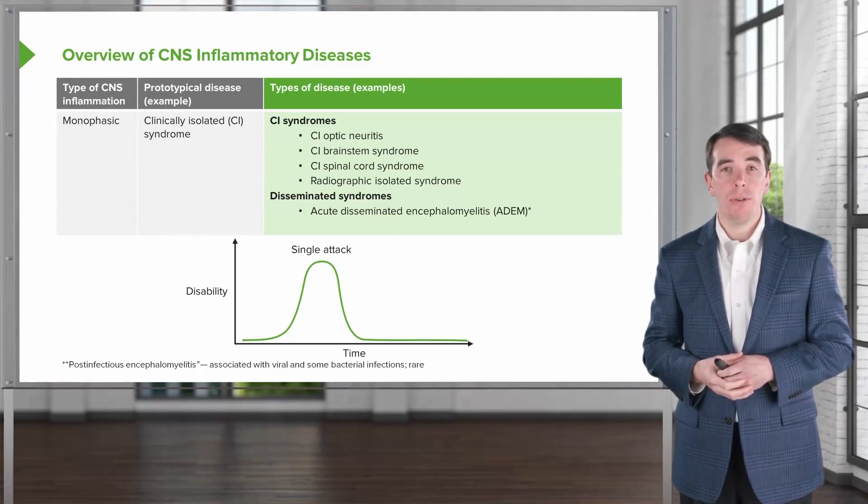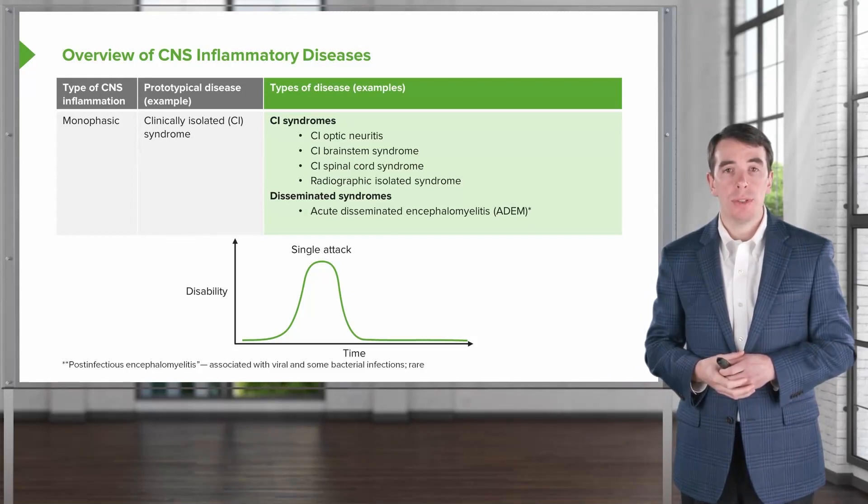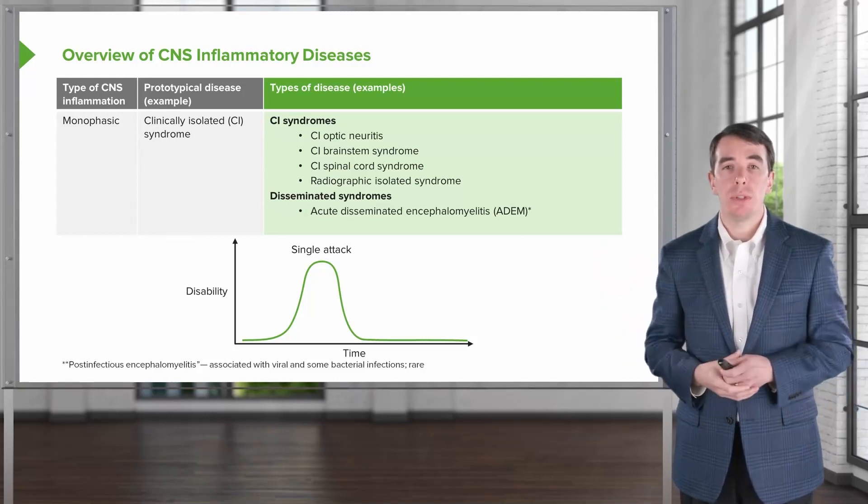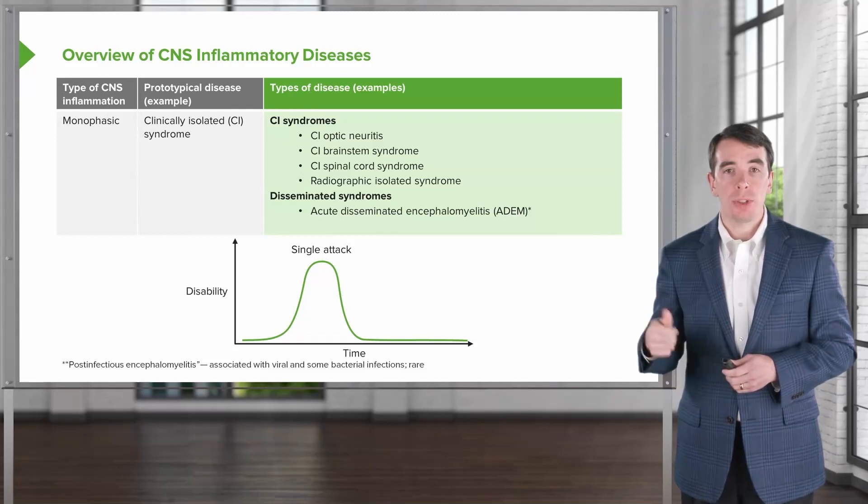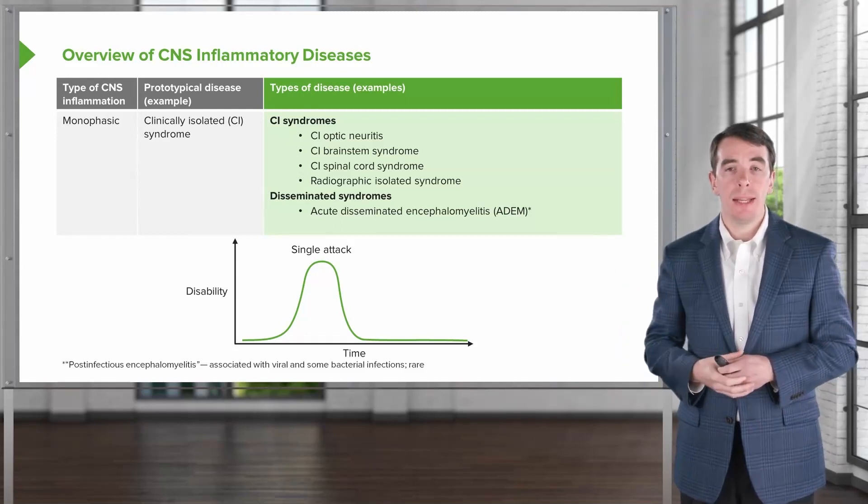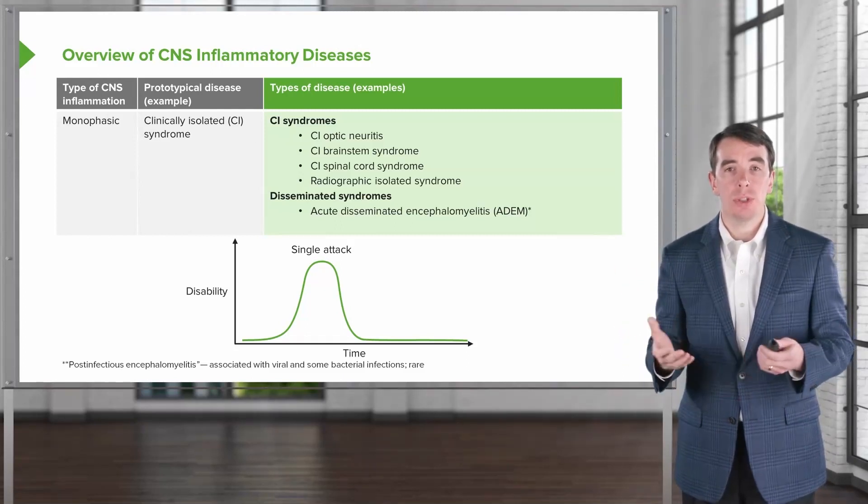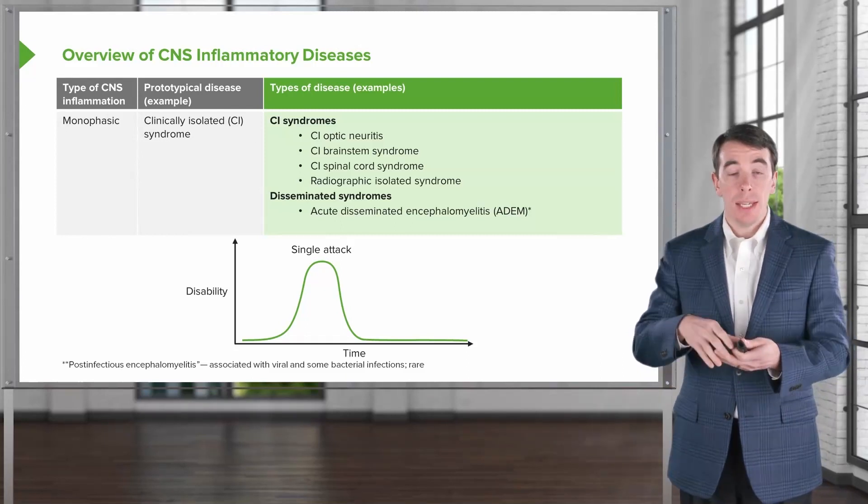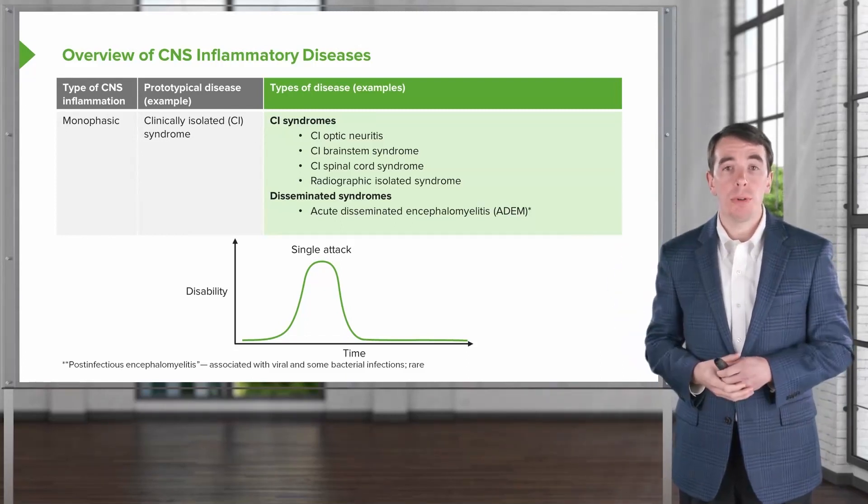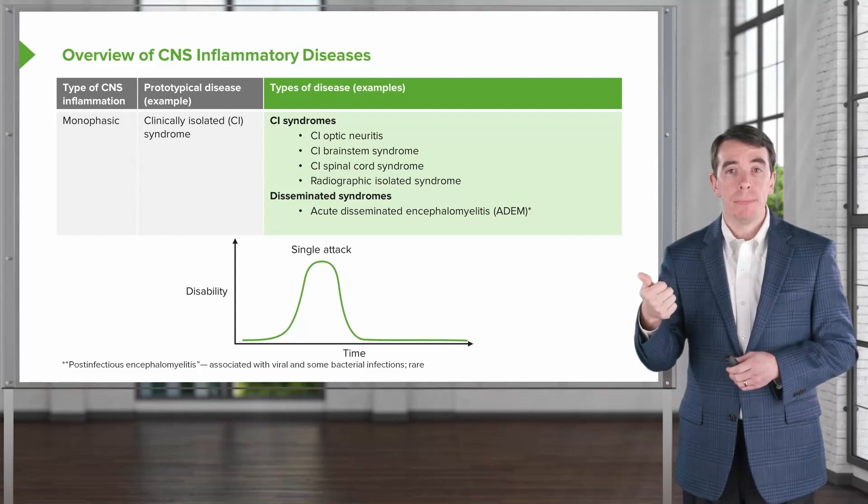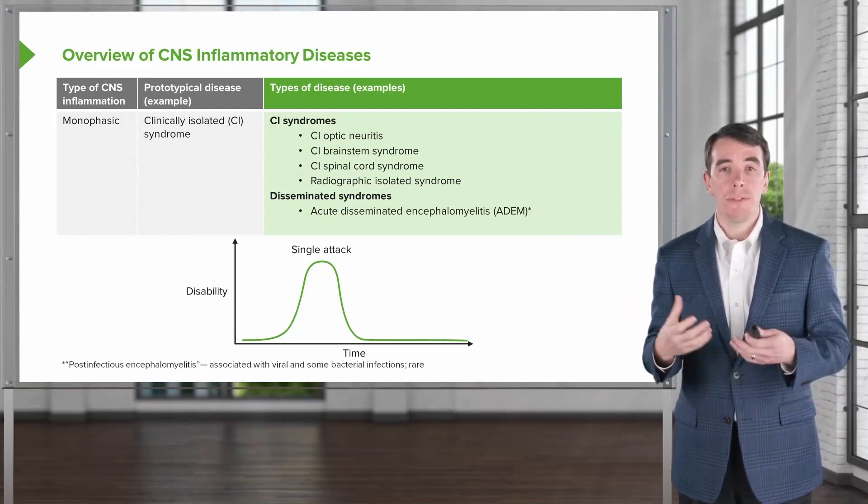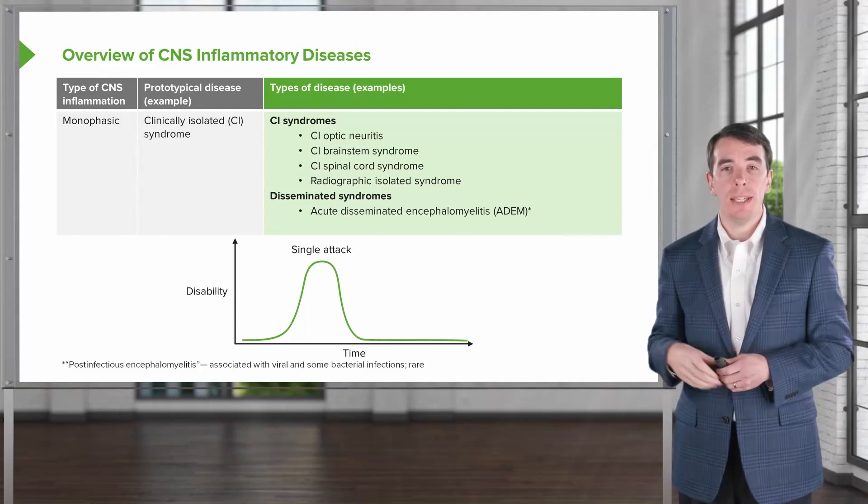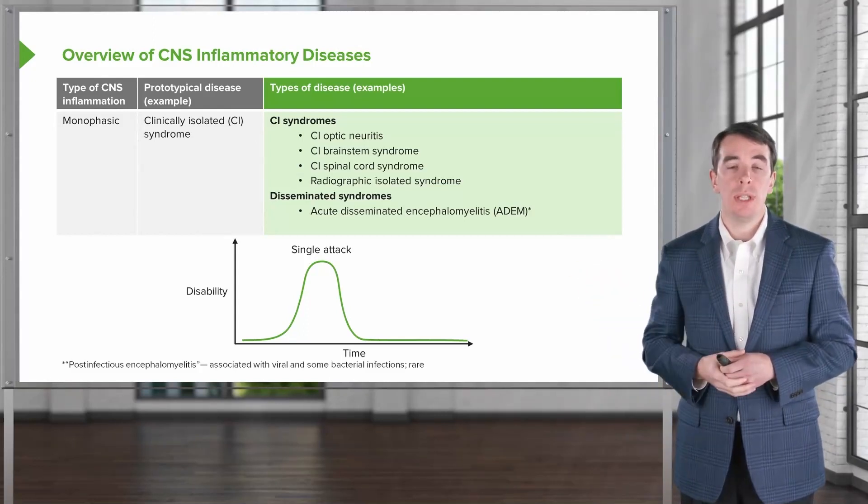We can also see monophasic inflammatory disorders where there's dissemination of symptoms over nearly the entire neuroaxis or central nervous system. The most common of those is the acute demyelinating encephalomyelitis, which is called ADEM. This is a diffuse multifocal process that involves the brain and the spinal cord. That's why it's an encephalomyelitis. It's an inflammatory disorder.